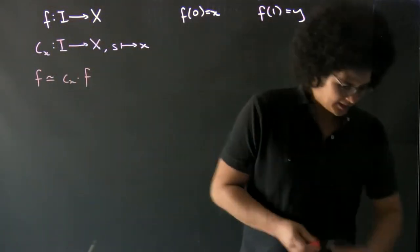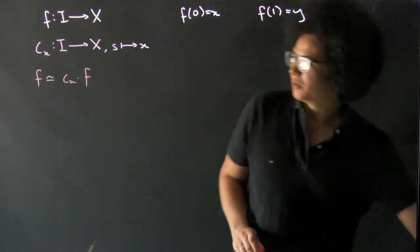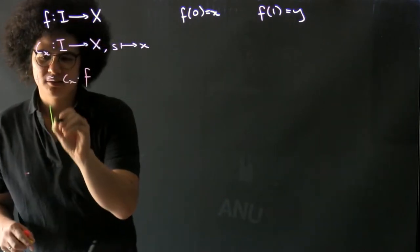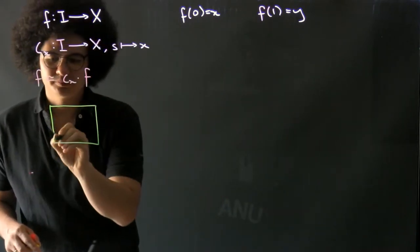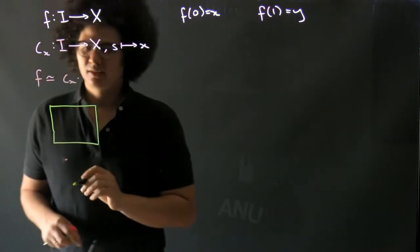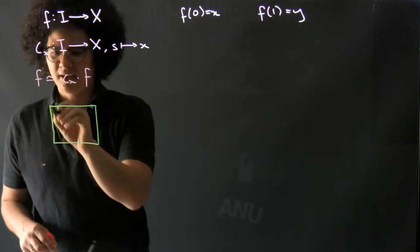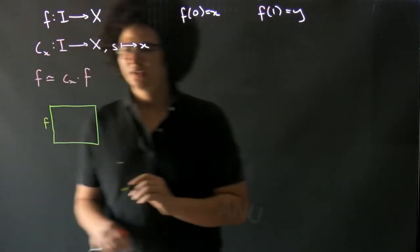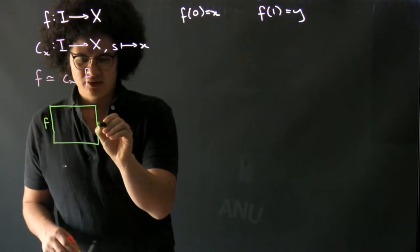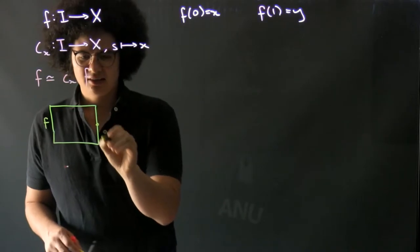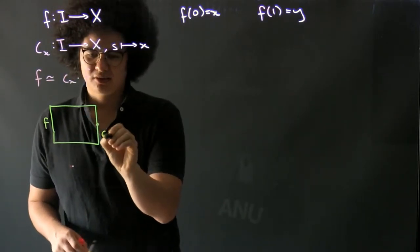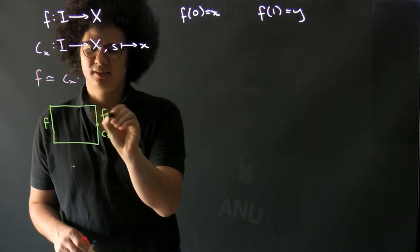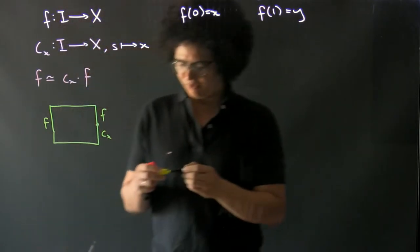What is this saying? Well, I want to show that there's a homotopy which on this side is just our original path, and on this side it first is constant at x and then it does f.